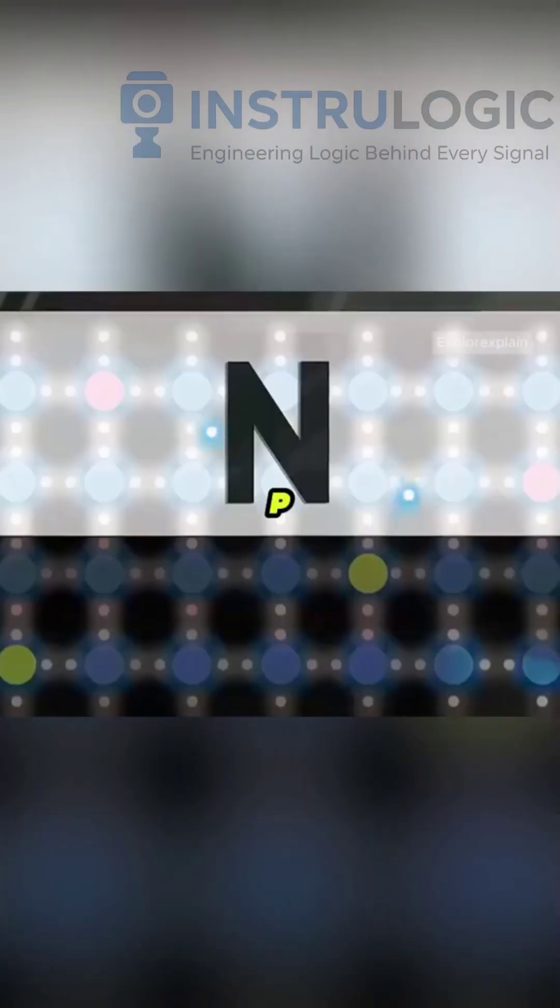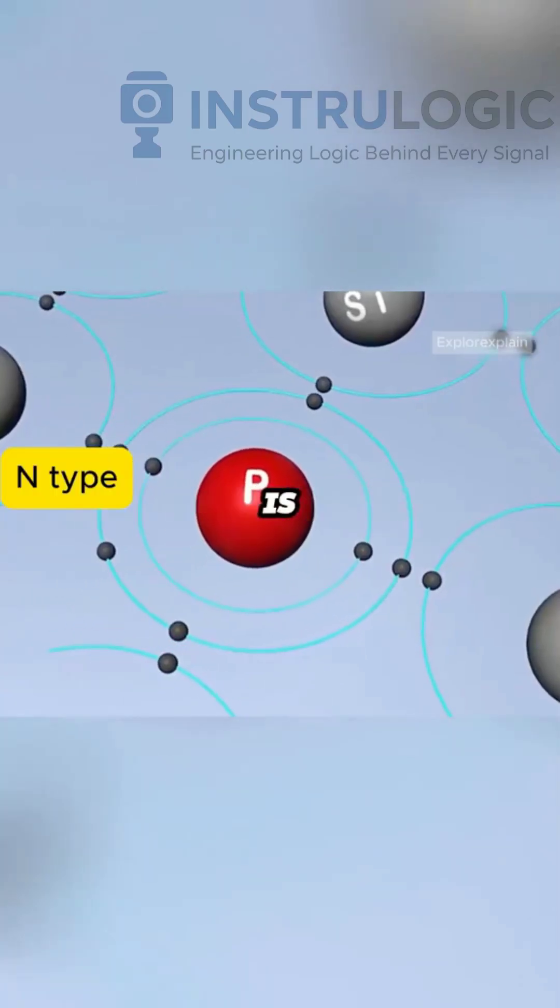The simplest method is a p-n junction. The side with added phosphorus is called the n-type.